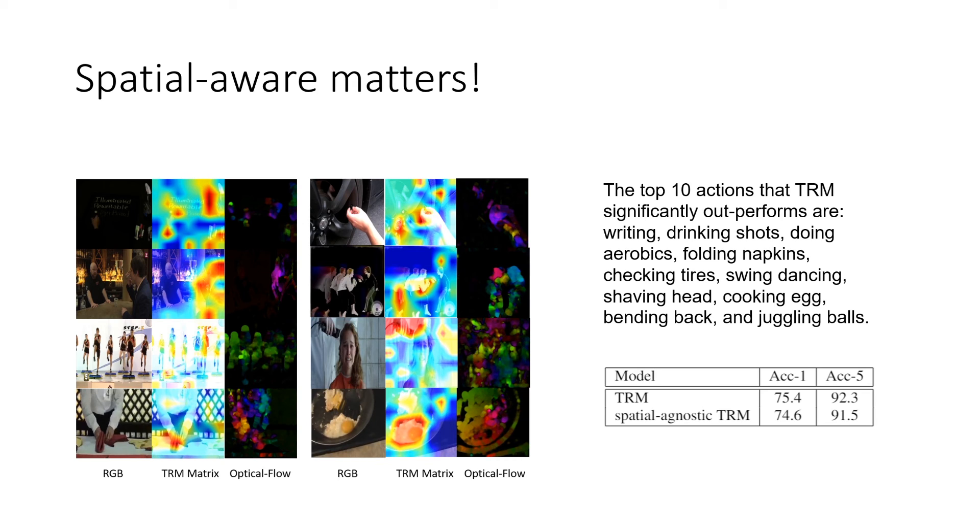We mentioned our spatial design. We want to know if such kind of spatial design works. To do this, we especially study the function of learning temporal relocation methods pixel-wisely. We trained a spatial non-wise TRM module for comparison on Kinetics. You can find the spatial-wise TRM significantly outperforms spatial non-wise TRM. We also list the top actions that TRM significantly outperforms. Here in the visualization, there are the top eight actions we can find. The majority of them have a very significant difference of temporal relocation in regions.